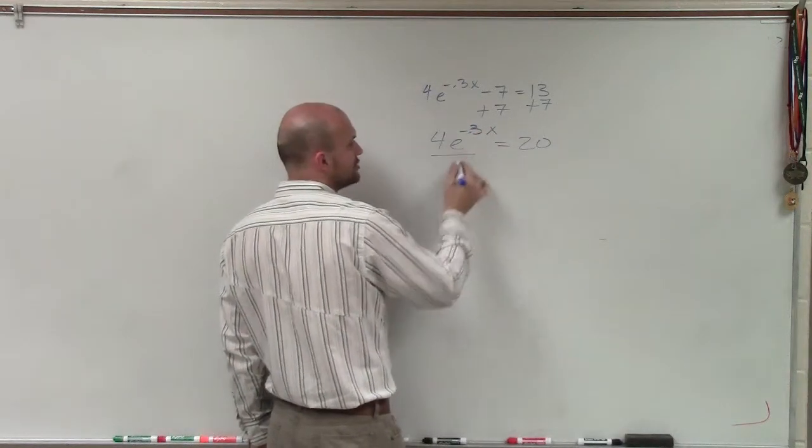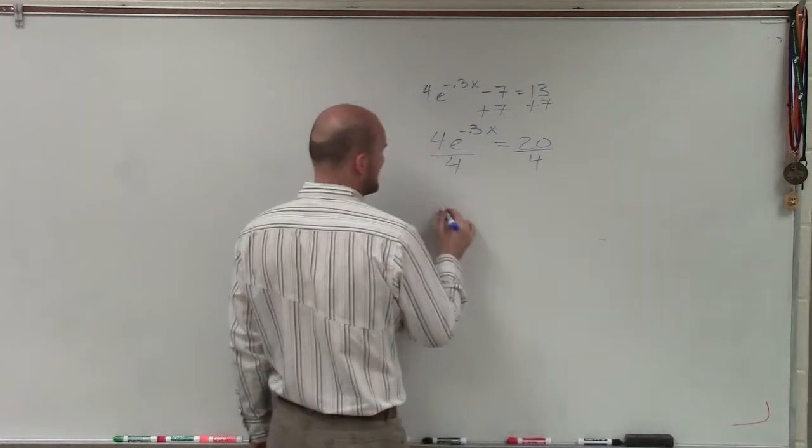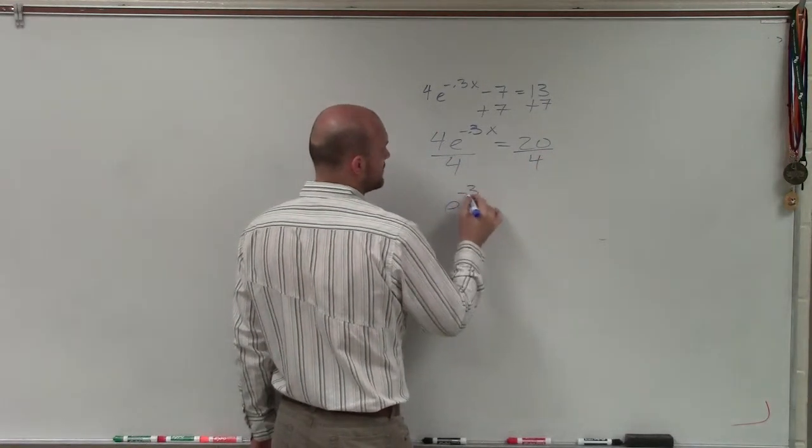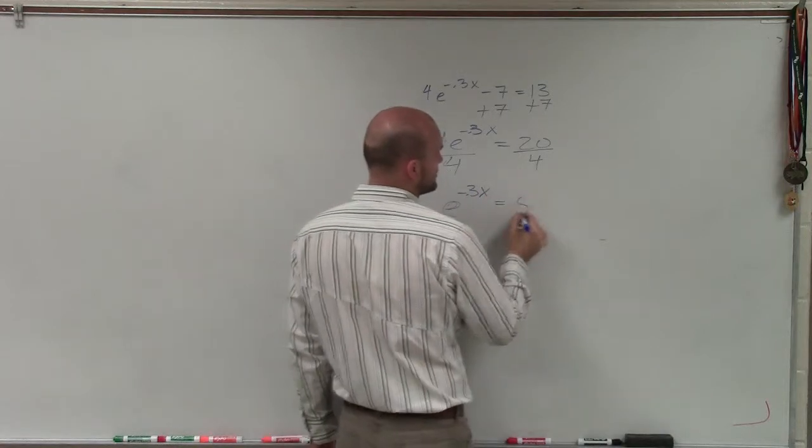Now I need to undo multiplication, so I'll divide by 4 on both sides. So I have e to the negative 0.3x equals 5.